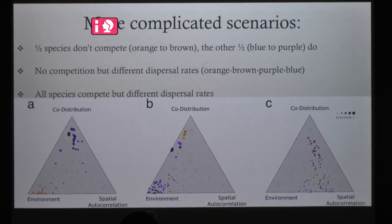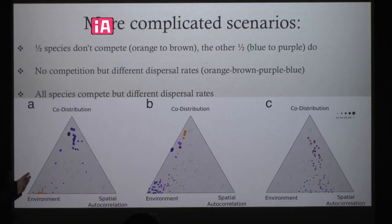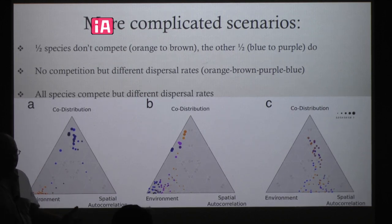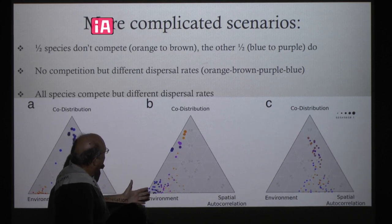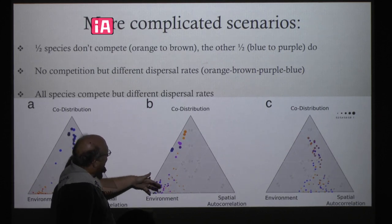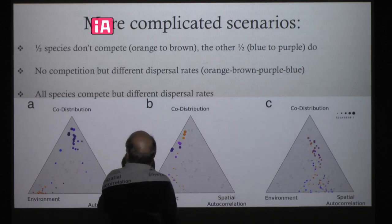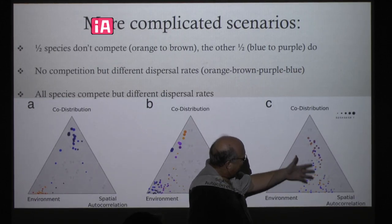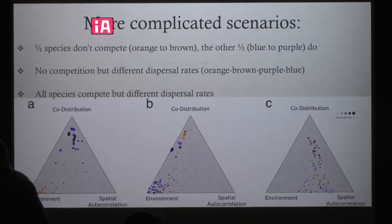Here's a scenario where half the species don't compete but half of them do. Orange versus blue lines up to show that when you combine these, you can tell which ones are competing and which ones aren't. With no competition but different dispersal rates, we get a different pattern. With all species competing but varying dispersal rates, we get other patterns as well. This shows the species perspective on the metacommunity.